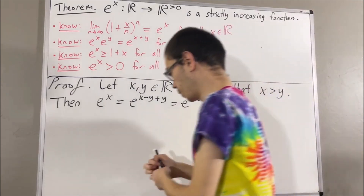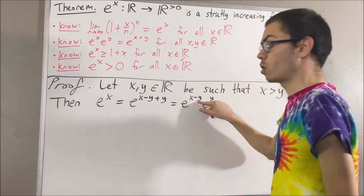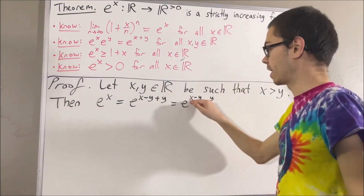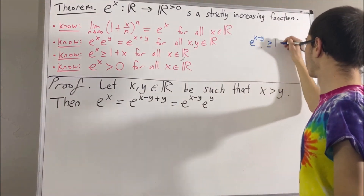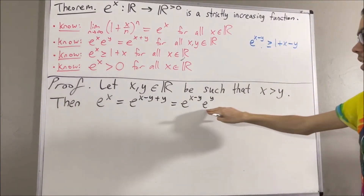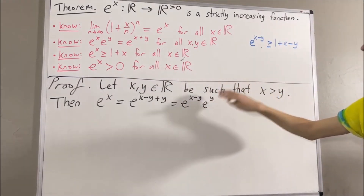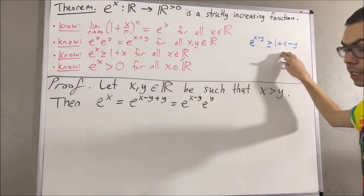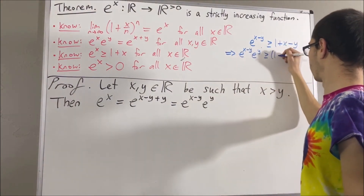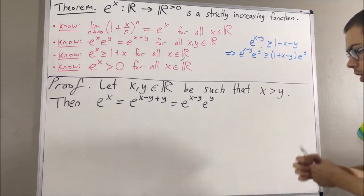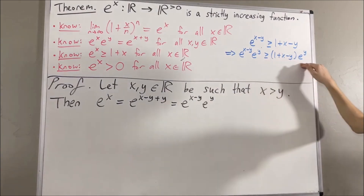If we apply our second preliminary result to x minus y, we have that e to the x minus y is greater than or equal to 1 plus x minus y. And then, since e to the y is positive, if we multiply e to the y on both sides of this inequality, the sign of the inequality will remain the same. So we see that e to the x minus y times e to the y is greater than or equal to 1 plus x minus y times e to the y.